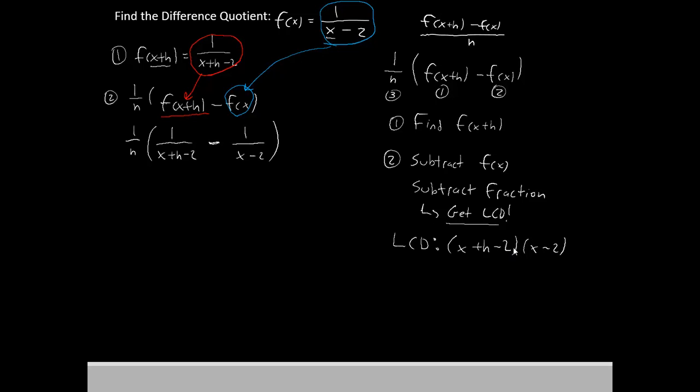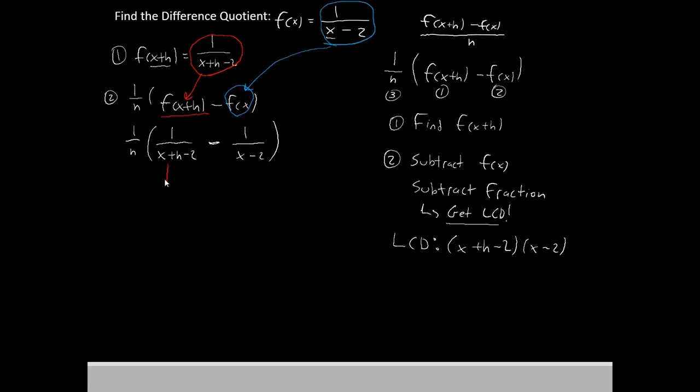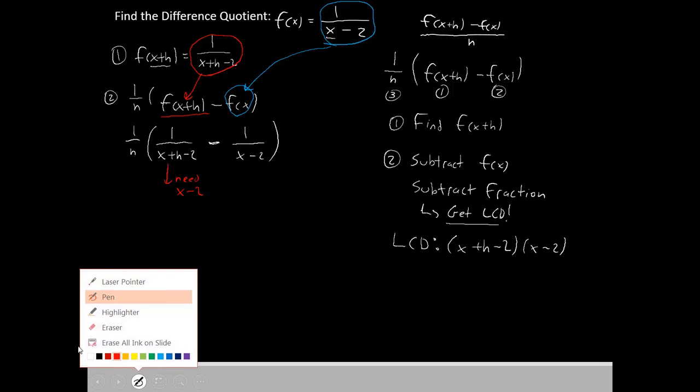Now we have to ask ourselves, how do we change this denominator to the LCD that we want? We can see that we have the x plus h minus 2 here already, but the LCD also includes the x minus 2. So let's make a note of that. This fraction is going to need x minus 2. So let's put it in.